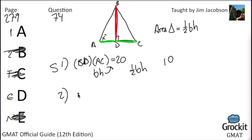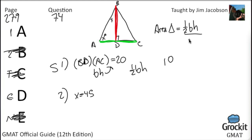Statement 2: X equals 45 degrees. This tells us each of the two individual triangles are 45-45-90 triangles, so the remaining angles are also 45. But that doesn't give us any side lengths, and it's the side lengths we need to determine the area. Statement 2 is not sufficient; we eliminate D. Answer choice A is correct.